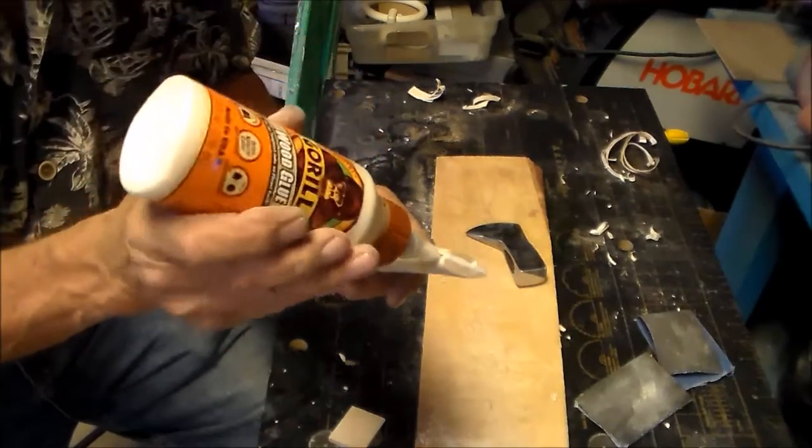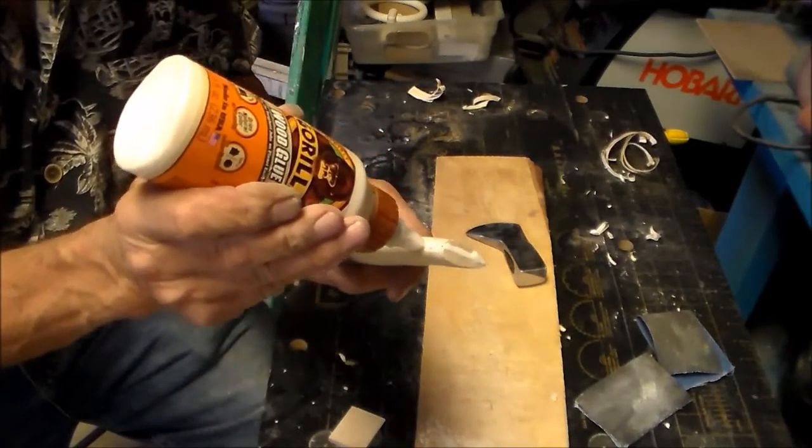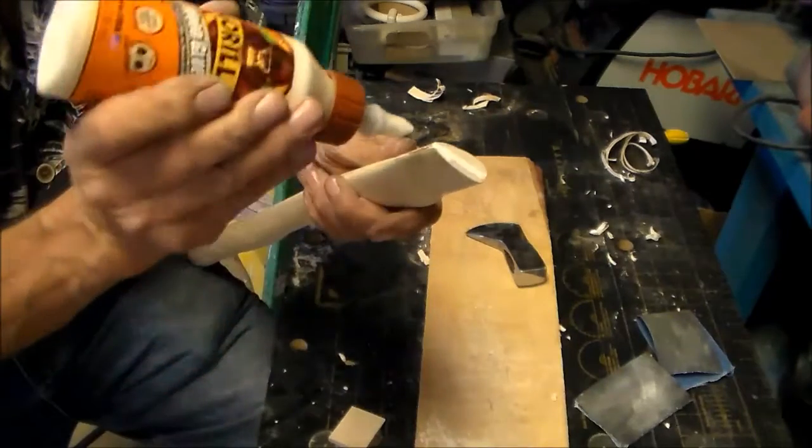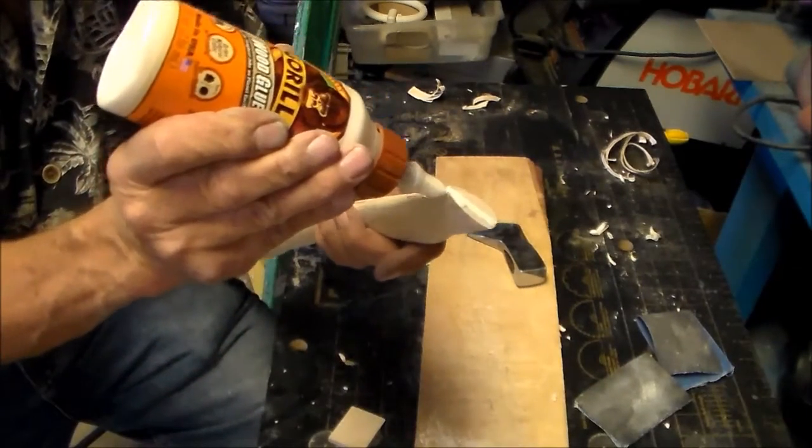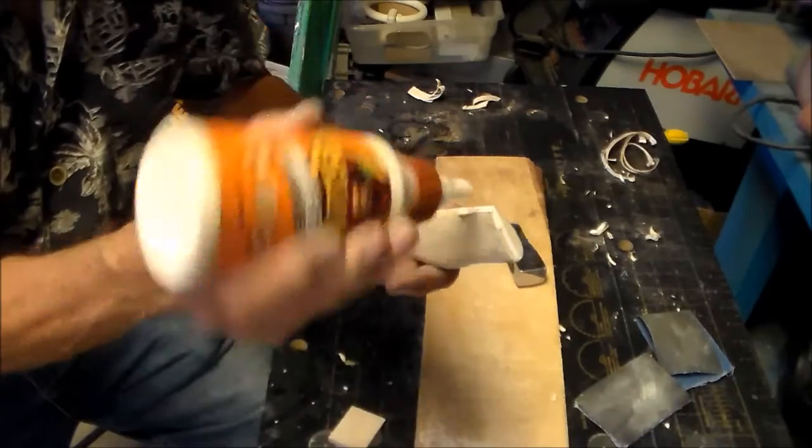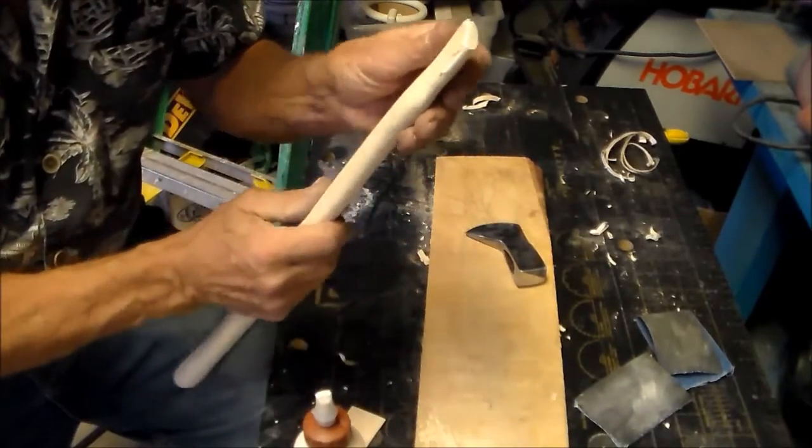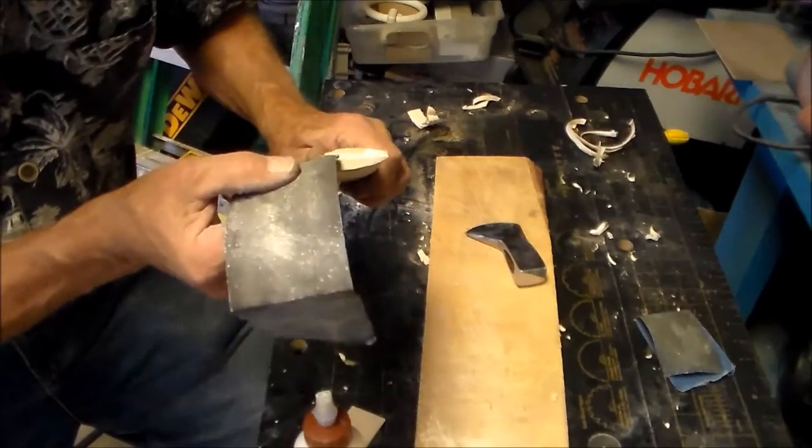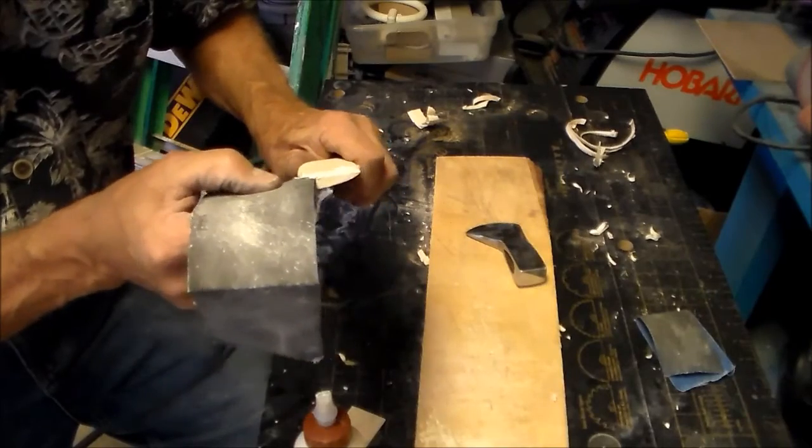And I'm going to work this glue down into the slot. And I'm also going to put glue on the wedge on both surfaces. The wooden wedge that you use should be made out of a piece of hardwood.